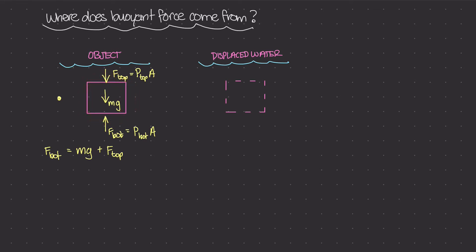On the displaced water diagram, I'm going to have F sub top — the force due to the pressure at the top of that area times A, so this equals P top times A. And at the bottom we have F sub bottom equal to P bottom times A. Now I'm going to label a couple things: this block has a height of D, and the distance from the surface level of the water down to the bottom of the block I'll call H. We'll need those in a little bit.